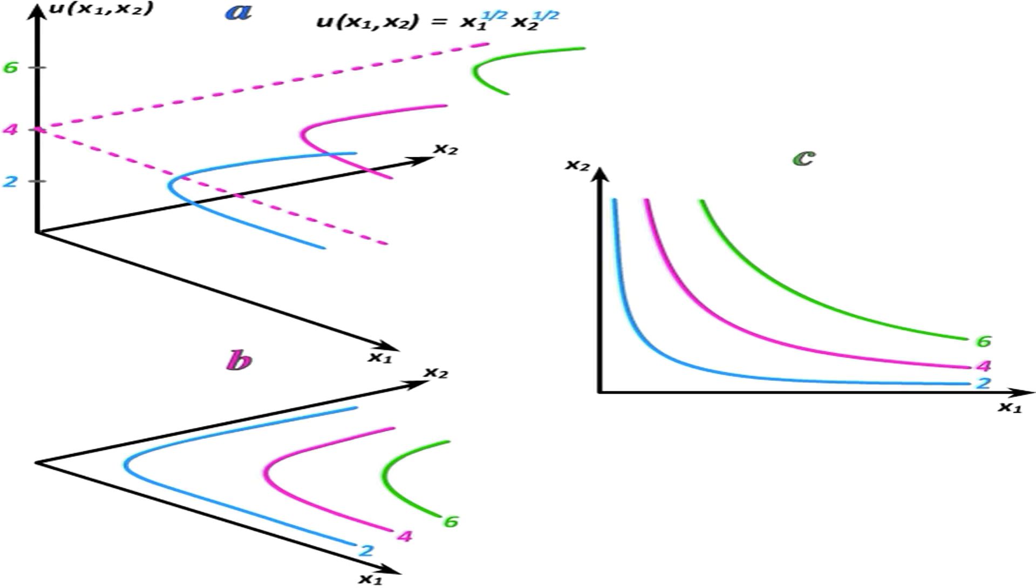We can think of indifference curves as slices of utility mountains where those mountains can be represented mathematically as utility functions. The number next to an indifference curve indicates the height at which that indifference curve occurs on the mountain.